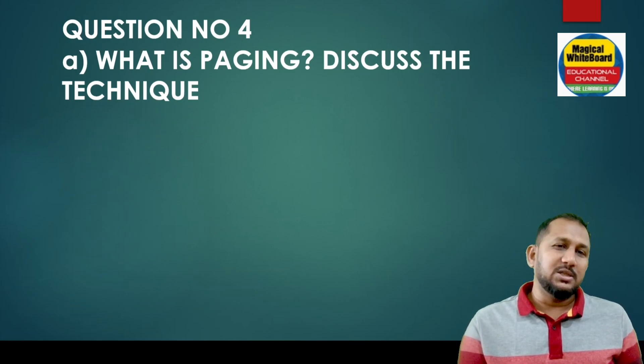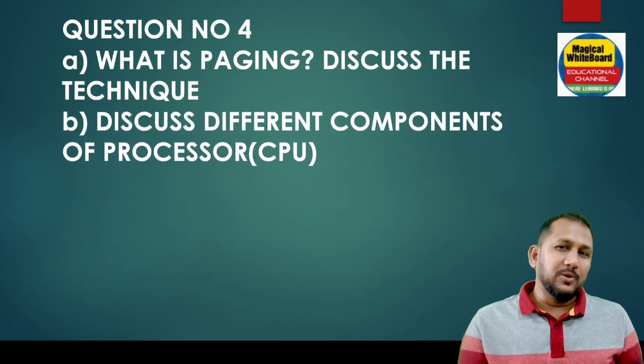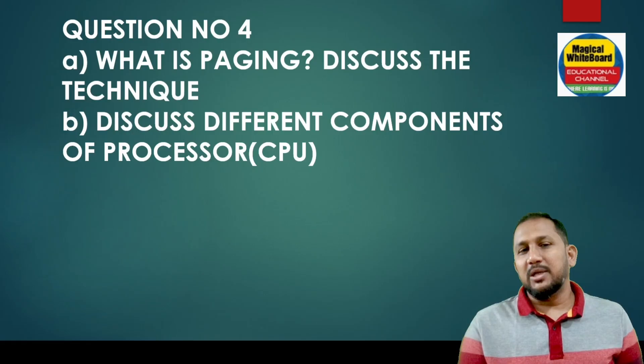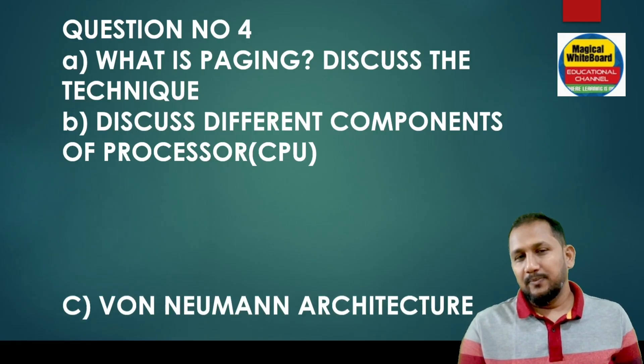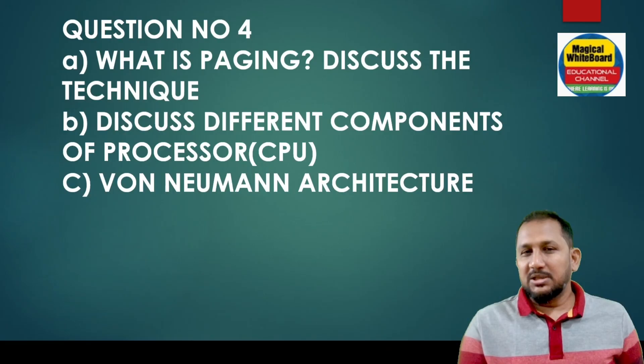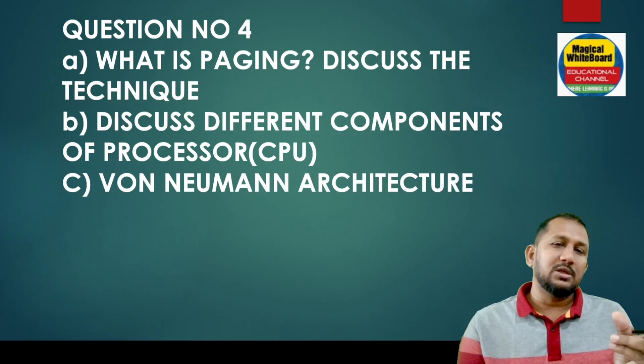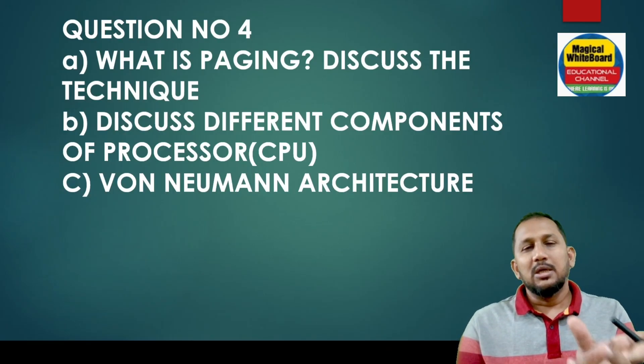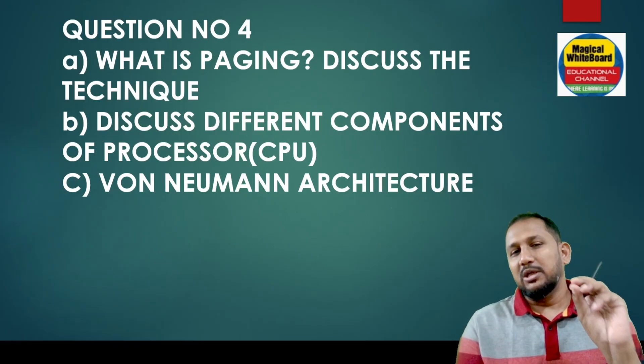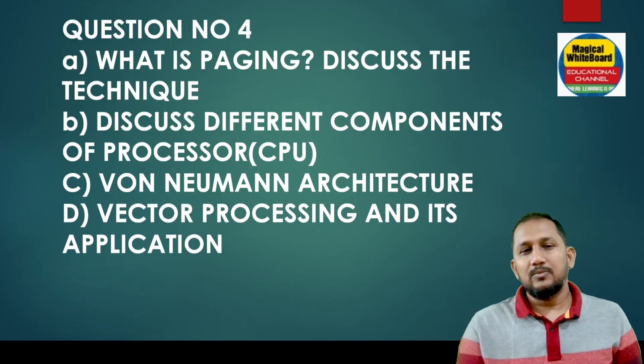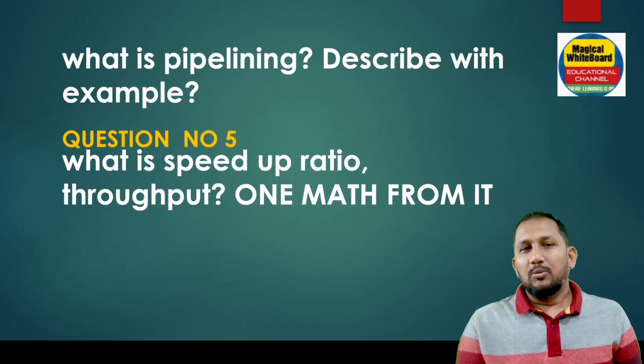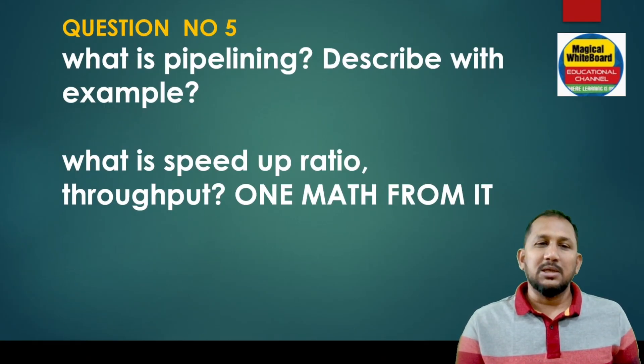Paging, describe the technique of paging. Discuss different components of Von Neumann architecture. What is the architecture of components described? Von Neumann architecture. Basically all the questions are related. Parts and components are described. All the answers are written in this question. Vector processing. What is pipelining described with an example? What is speed-up ratio?